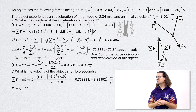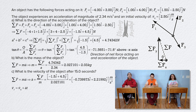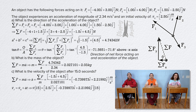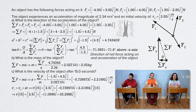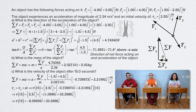Bo, please finish determining the velocity of the object at 15 seconds. Velocity at 15 seconds equals the initial velocity 2.5i plus the acceleration negative 0.739973i plus 2.21992j times 15 seconds. That works out to be 2.5i plus negative 11.0996i plus 33.2988j, or after combining the i values and rounding to three significant digits: negative 8.60i plus 33.3j meters per second.